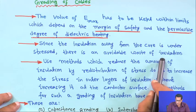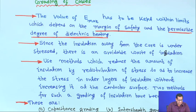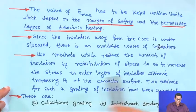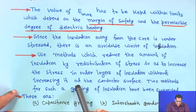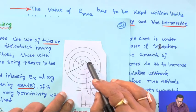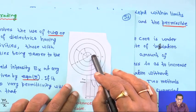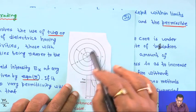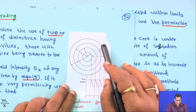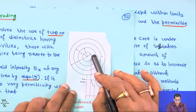There is an unavoidable waste of insulation. To address this, methods are used which reduce the amount of insulation by redistribution of stress, so as to increase the stress in outer layers of insulation without increasing it at the conductor surface.